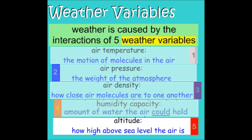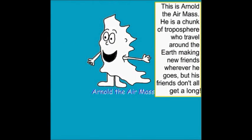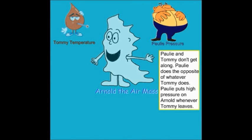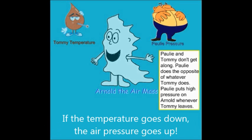To make it more familiar, let's consider these variables as personified characters. This is Arnold the air mass — a chunk of troposphere who travels around the Earth making new friends. His first friend is Tommy Temperature. Arnold finds Tommy above warm parts of the Earth, like a dark, rough surface that receives lots of high-intensity insolation. Pauly Pressure and Tommy Temperature don't get along — Pauly does the opposite of whatever Tommy does. If the temperature goes down, air pressure tends to go up, and vice versa.